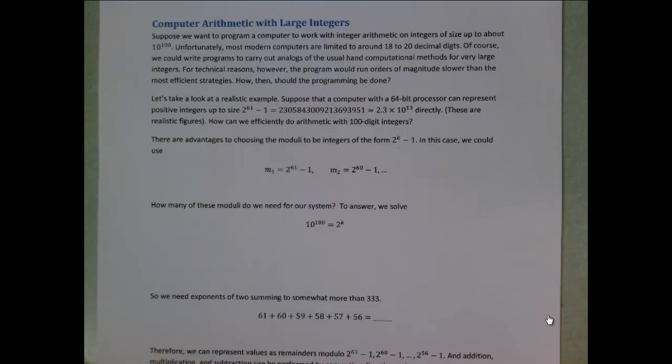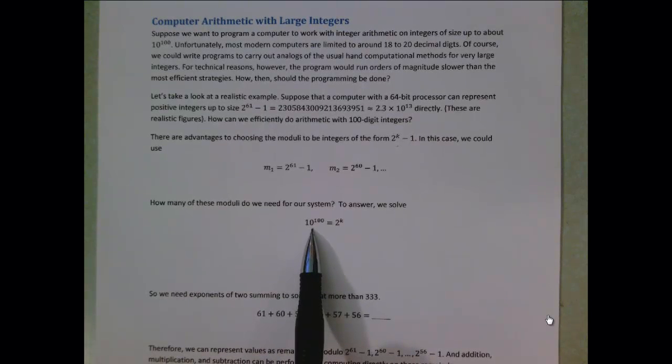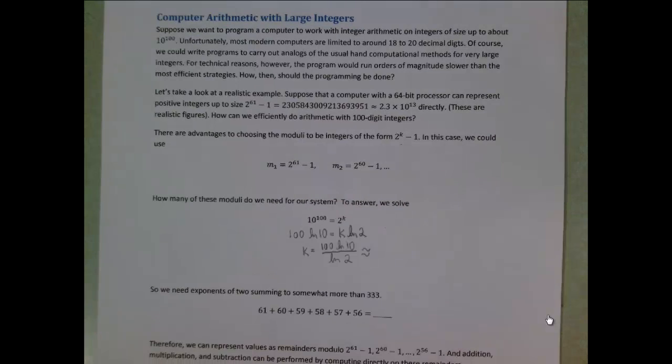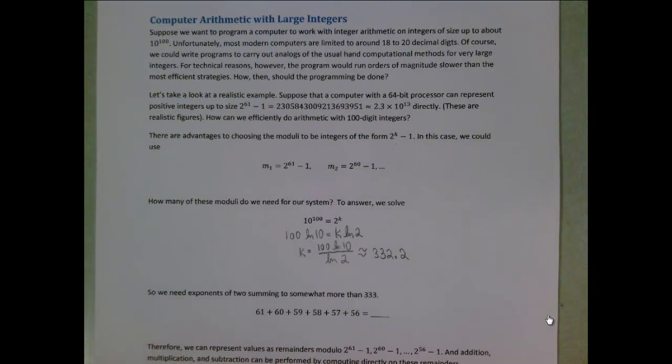There are advantages to choosing the moduli to be of the form 2 to the k minus 1. In this case, that would mean we'd use moduli of 2 to the 61 minus 1, 2 to the 60 minus 1, etc., until we had enough to represent integers of sufficient size. How many would we need? We want to represent integers up to about 10 to the 100th power, so we'd solve the equation 10 to the 100 equals 2 to the k. k turns out to be about 332.2, so we need exponents of 2 that sum to something more than 333.